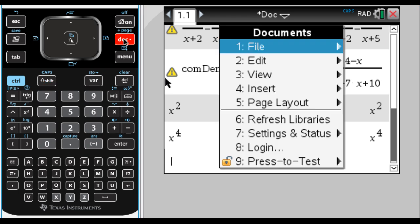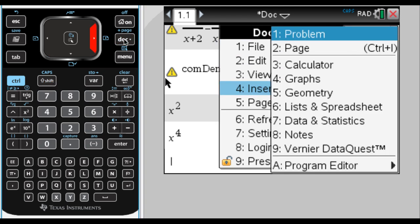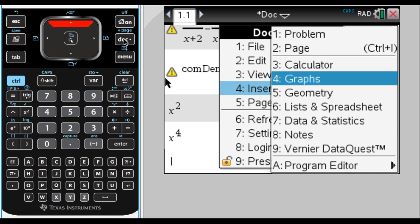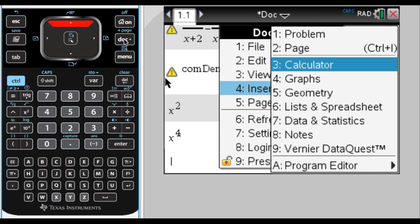One of them is to press Doc, and then go down to number 4, so Doc 4, and then you can pick what you want to insert. This is the way that I always do it because it's the first way that I ever did it.